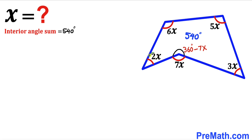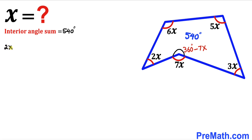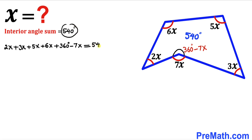Now let's make an observation: we can see that 2x, 3x, 5x, 6x, and (360 degrees minus 7x) are our interior angles. Let's add up those interior angles for this pentagon: 2x plus 3x plus 5x plus 6x plus (360 degrees minus 7x) is going to be equal to the total interior angle sum of 540 degrees.